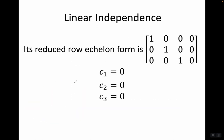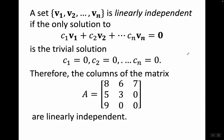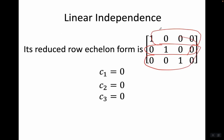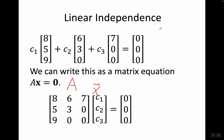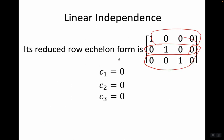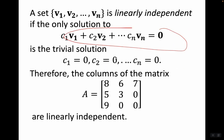We know how to solve a system of equations like that. We get it in reduced row echelon form. This is what we end up with. Notice what our solution is: c1 = 0, c2 = 0, c3 = 0. Remember that a set is linearly independent if the only solution to this equation is the trivial solution. And that's exactly what we had — the only solution to this matrix equation is the trivial solution.